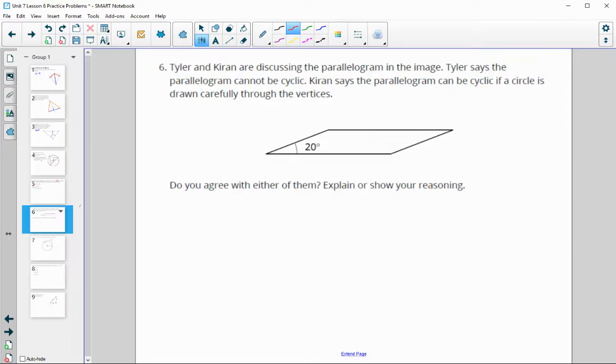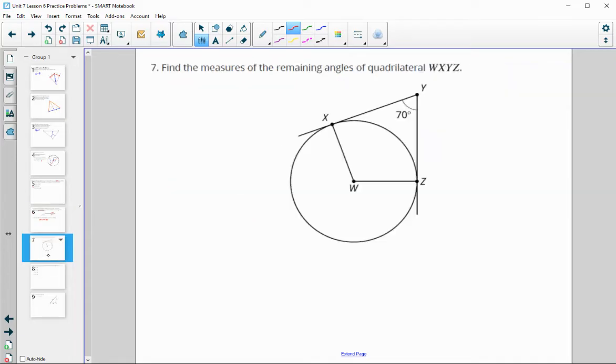Number 6, Tyler and Kyron are discussing the parallelogram in the image. Tyler says the parallelogram cannot be cyclic. Kyron says that the parallelogram can be cyclic if a circle is drawn carefully through the vertices. Do you agree with either of them? For a parallelogram, opposite angles are always the same. If this angle is 20, then this angle is 20. For cyclic quadrilaterals, the opposite angles need to add to 180, and 20 plus 20 definitely does not equal 180. I would agree with Tyler that there is no way for this to be cyclic.